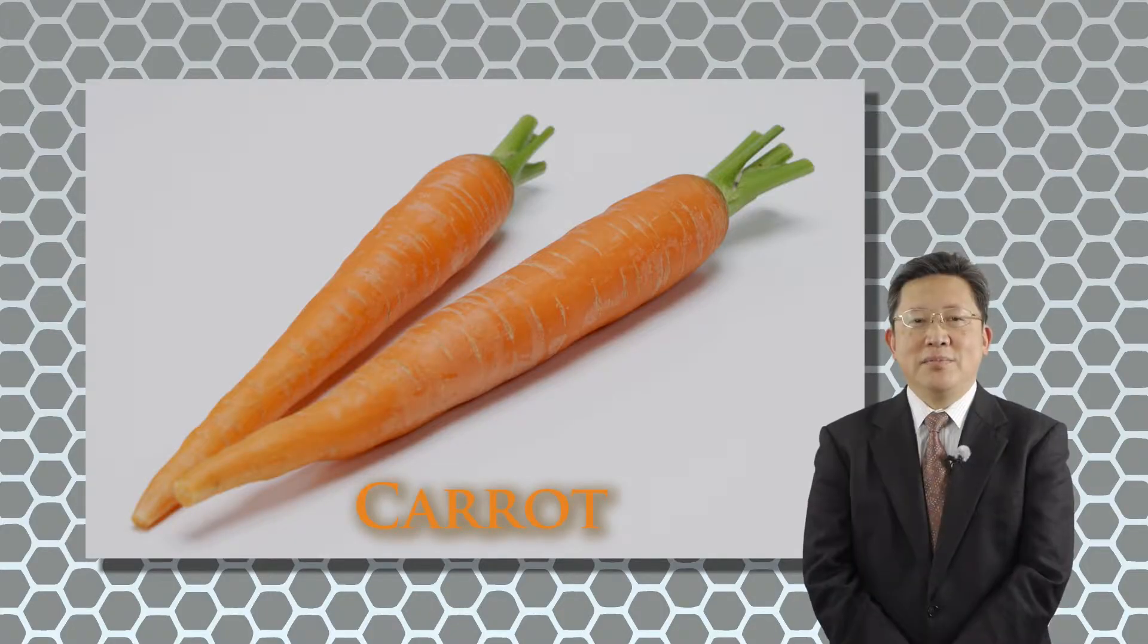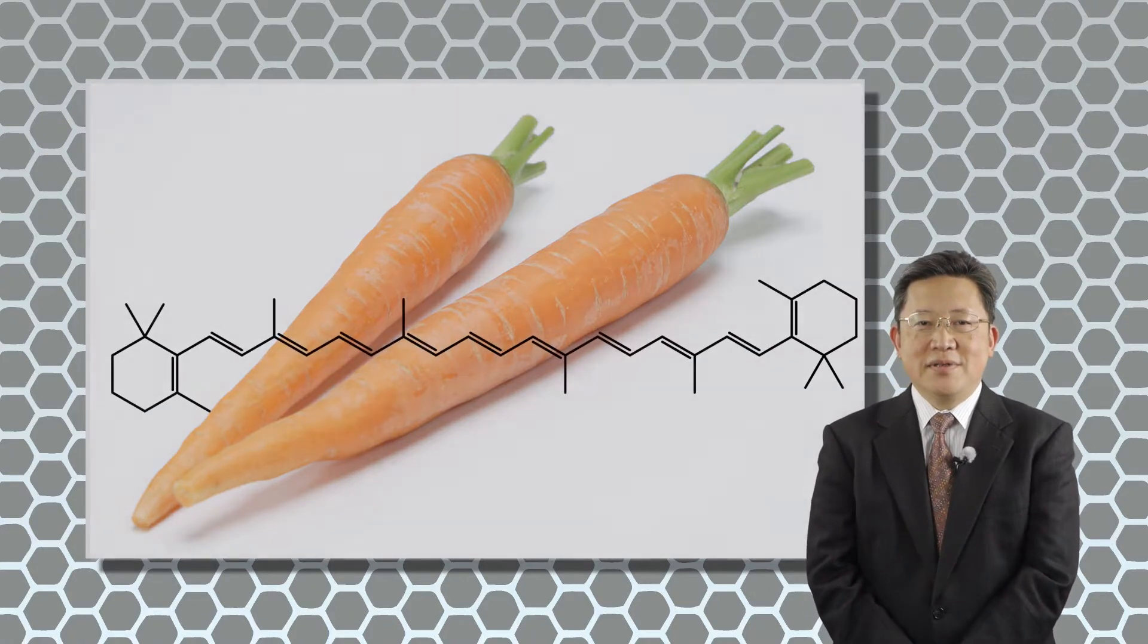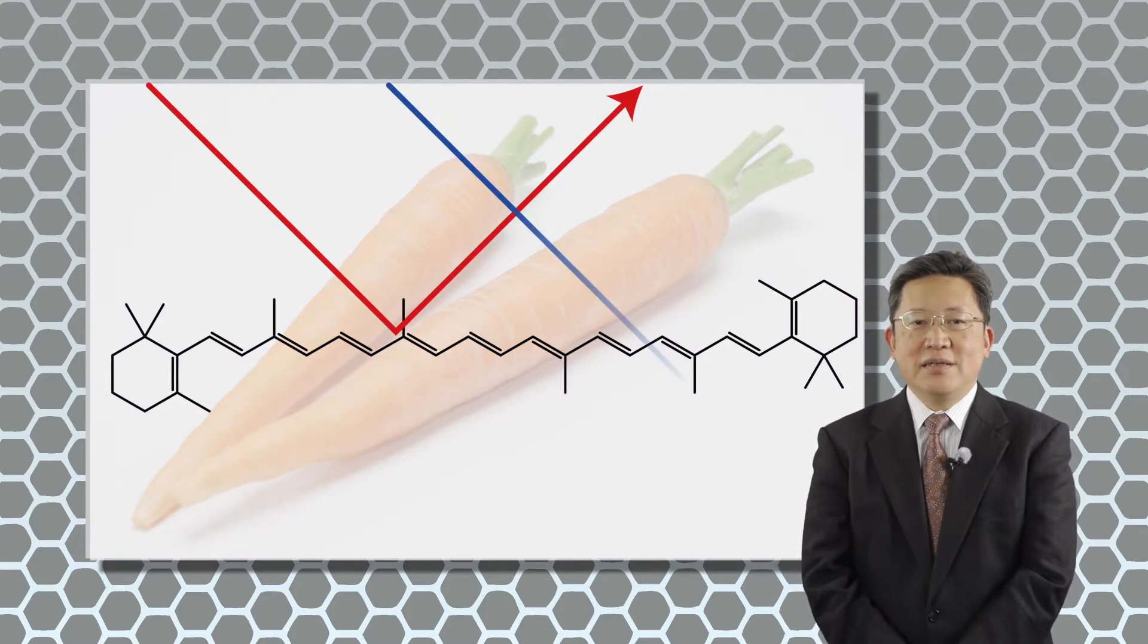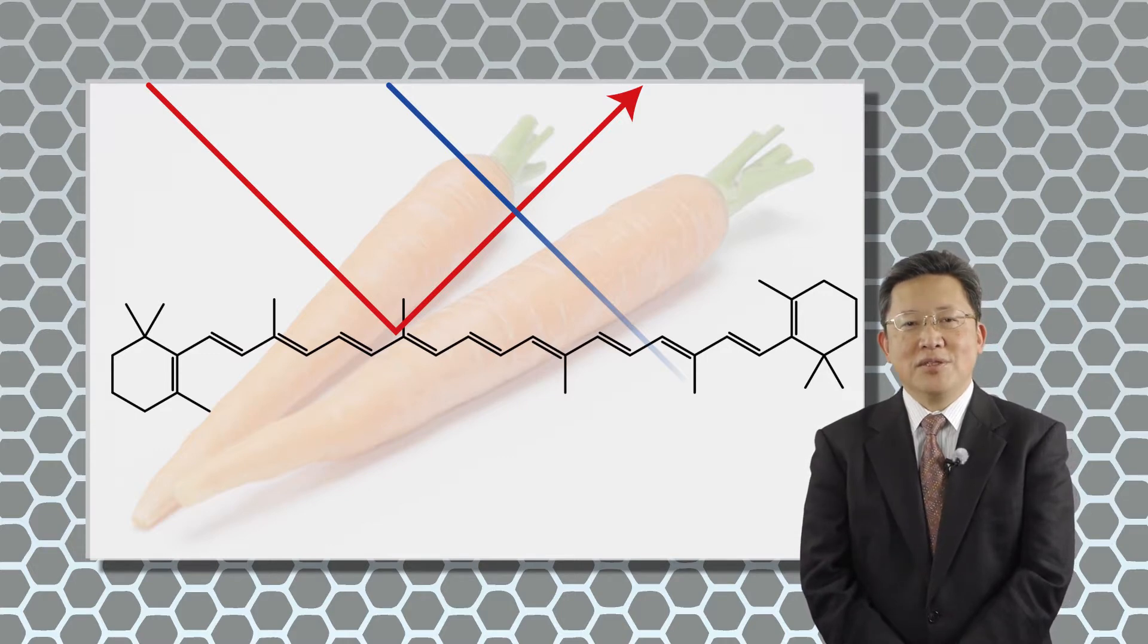For example, you know very well that carrot is orange. The reason why carrot is orange, in order to understand that, we need to know the knowledge of quantum mechanics.